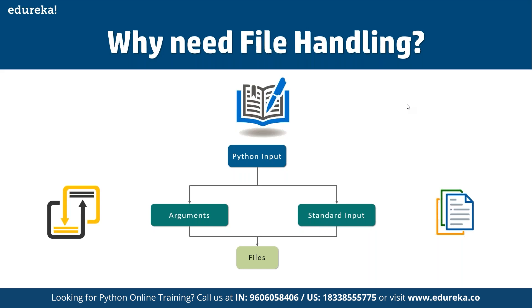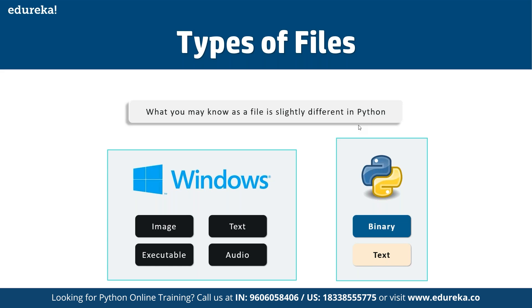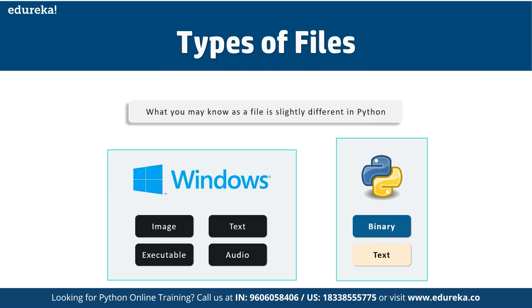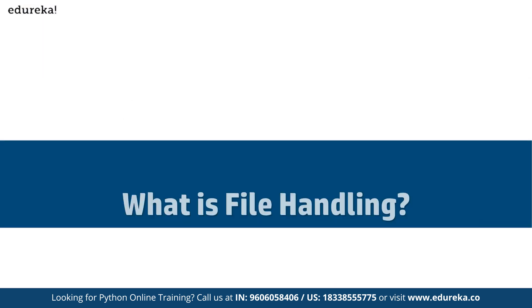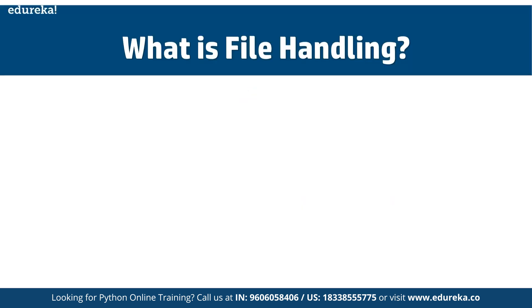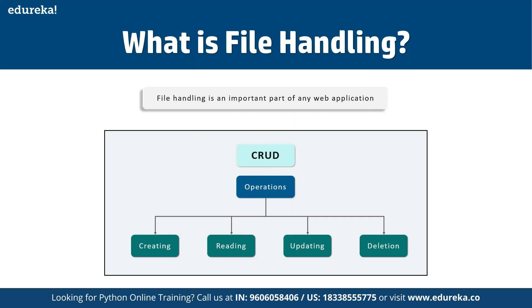There are multiple types of files. In Windows, we have files in the format of images, text, executables, audio clips, documents, PDFs, and more. In Python, we have either binary or text datasets that we can write. File handling is an important part of any web application — it allows us to not only handle files but also perform multiple CRUD operations: create, read, update, and delete.